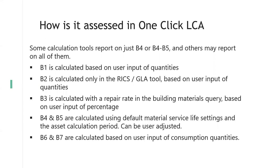B3 is usually done with the repair rate, which I'll show you tomorrow during the training, and is something you have to input yourself. When doing B3, you have to think about the fact that structural materials like steel and concrete will not be repaired usually — they'll just be left alone for the 60 years and are usually not replaced either. So repair rate really applies to materials which do not last as long as the building — facades, finishes, fittings, these kinds of things. B4 and B5 are calculated with the service life settings and the asset calculation period. If we have an office building lasting 60 years but floors being replaced after 30 years, that leads to replacement or refurbishment emissions.